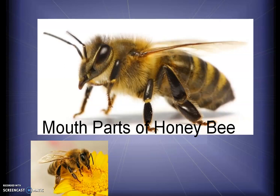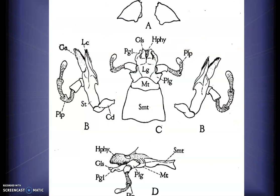Honeybee is an important insect pollinator. The mouthparts have been adapted to collect nectar — lapping type or sponging type — but the mandibles are a very important structure. They are included under the mandibulate type of mouthparts. Mouthparts have five basic parts studied earlier with cockroach: the upper lip, lower lip, mandibles, and maxilla.